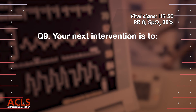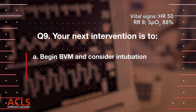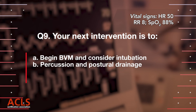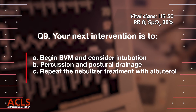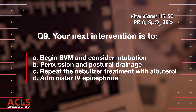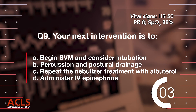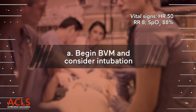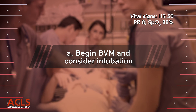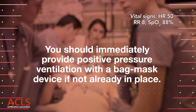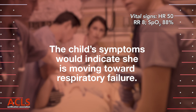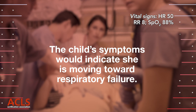Question 9: Your next intervention is to: A) Begin BVM and consider intubation; B) Percussion and postural drainage; C) Repeat the nebulizer treatment with albuterol; D) Administer IV epinephrine. Correct answer A — Begin BVM and consider intubation. You should immediately provide positive pressure ventilation with a bag mask device if not already in place. The child's symptoms indicate she is moving toward respiratory failure.